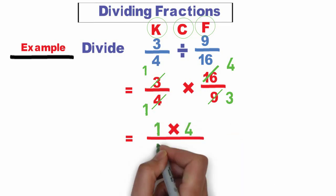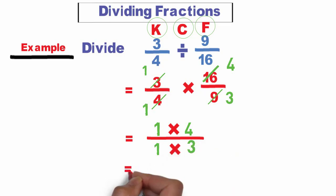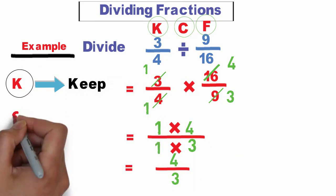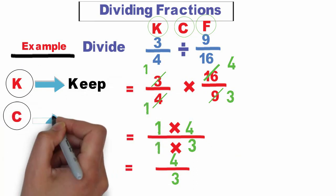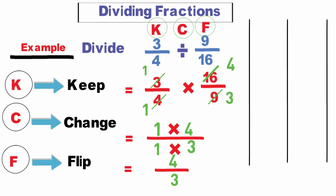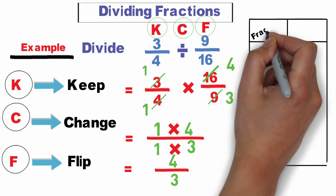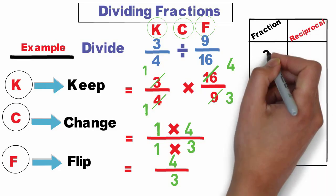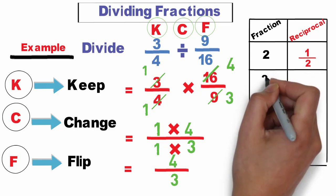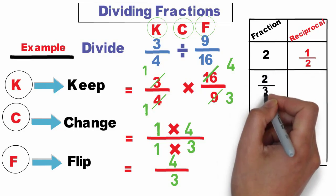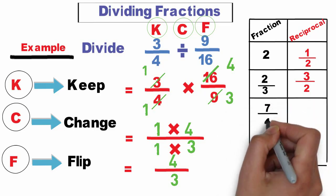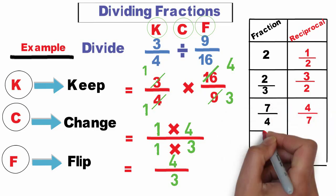Now multiply the remaining factors: it will be 1 times 4 over 1 times 3, which equals 4 over 3. Don't forget the KCF key — K means keep, C means change, F means flip. To find the reciprocal of a fraction, just flip it. The reciprocal of 2 is 1 half, the reciprocal of 2 over 3 is 3 over 2, the reciprocal of 7 over 4 is 4 over 7.